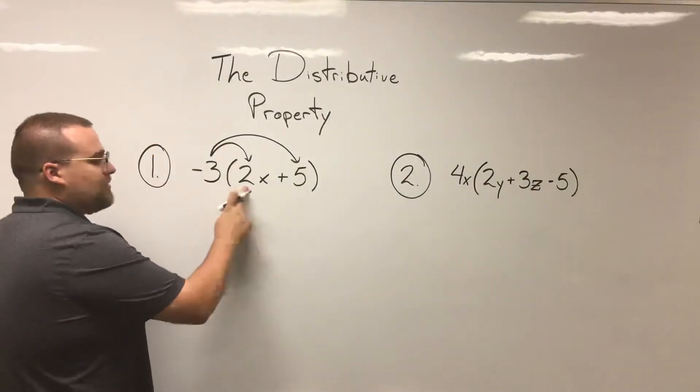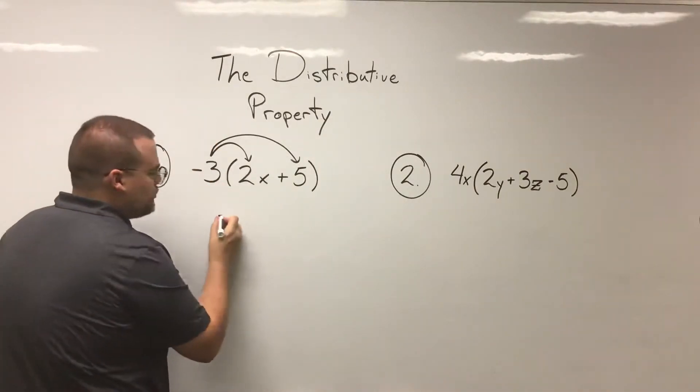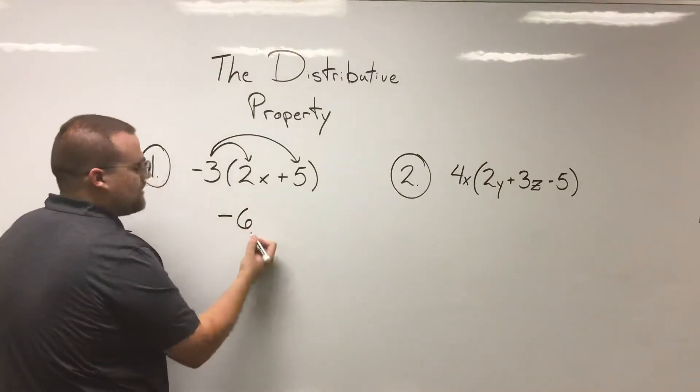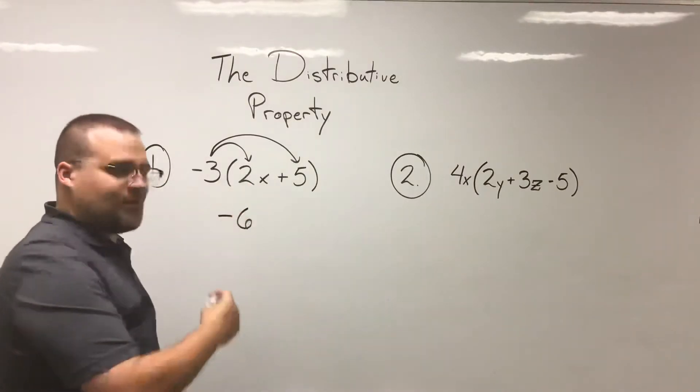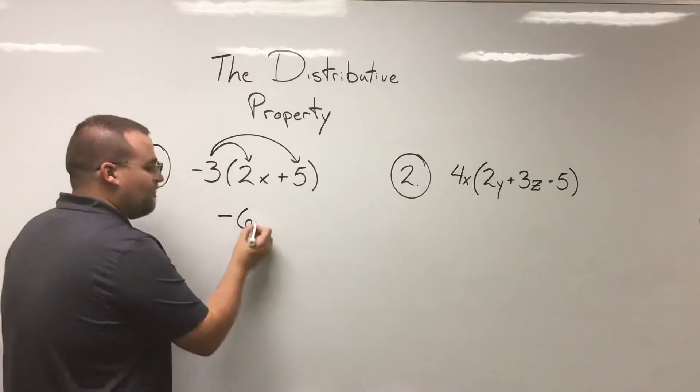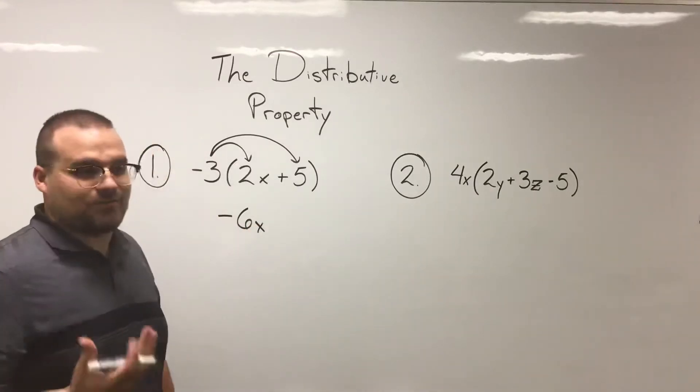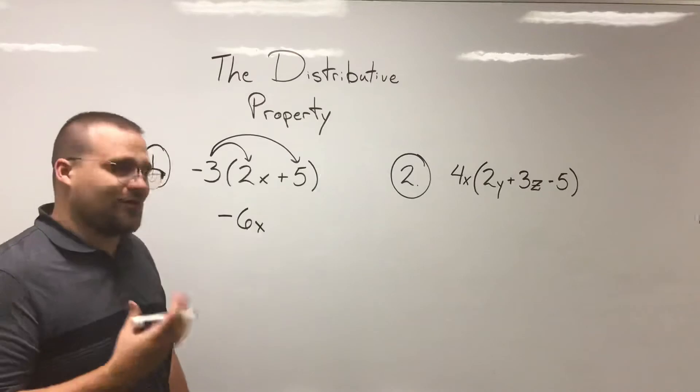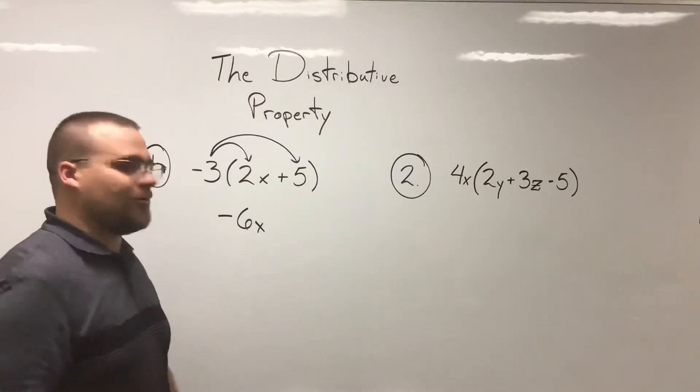So negative three times two is going to get us negative six. And we just have 1x here, so we're just going to have 1x after they multiply. That's the easiest way that works for me for thinking about that whenever I'm multiplying with variables.